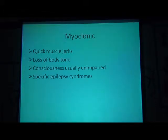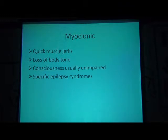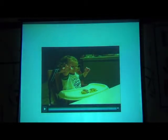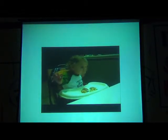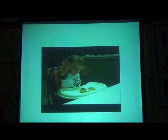The next seizure type is the myoclonic seizure. In myoclonic seizure, there are quick muscle jerks and body tone is usually lost. Consciousness is usually retained. It presents in specific epilepsy syndromes, such as Lennox-Gastaut syndrome or progressive myoclonic epilepsy. This is a video showing typical myoclonic jerks.